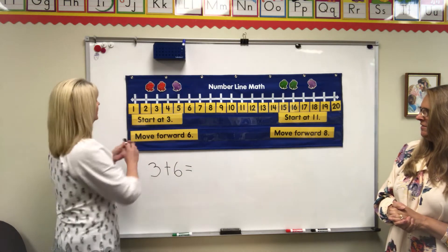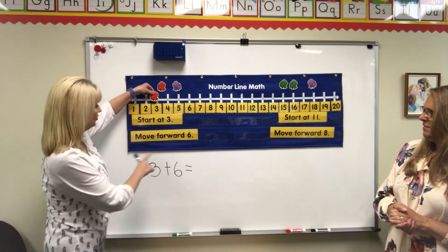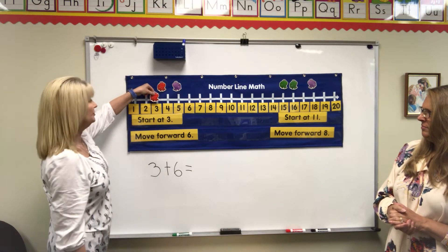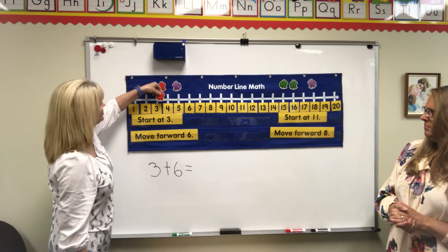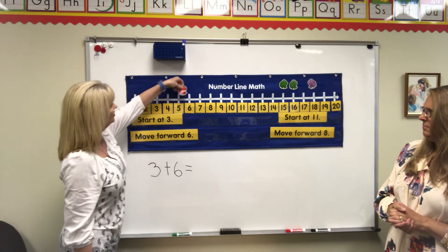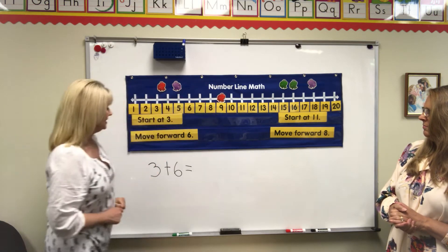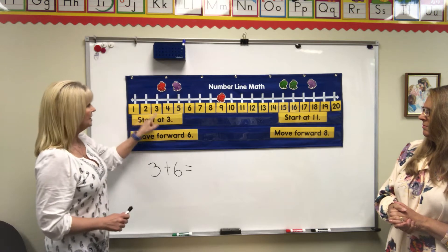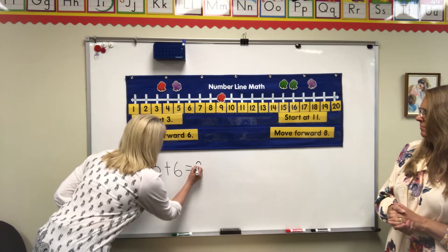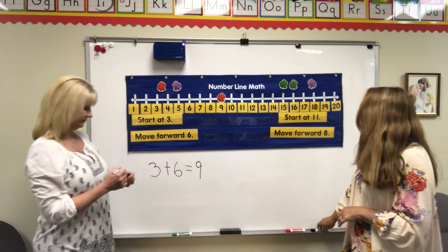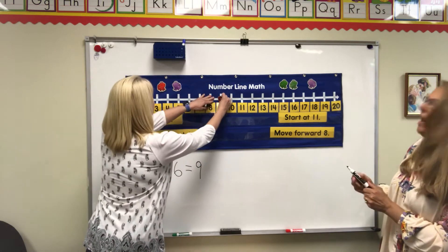I'm going to start my frog on 3 and move forward 6. I don't want to move this way because that would be backwards — I want to move this way, that's forward. So I'm going 1, 2, 3, 4, 5, 6. That tells me that 3 plus 6 equals 9, so I'm going to put my 9 right here.